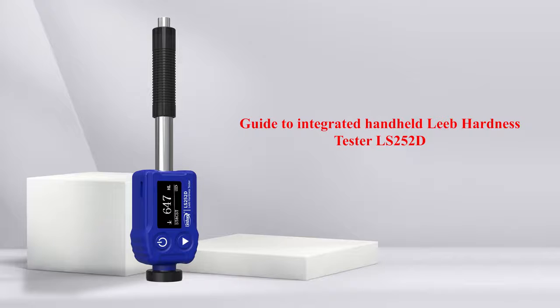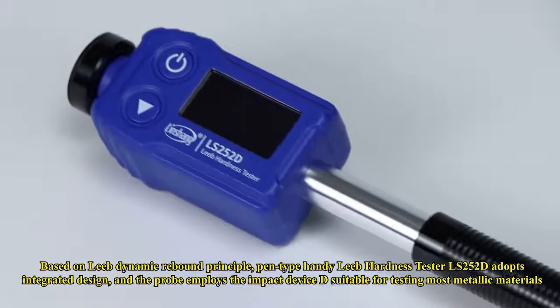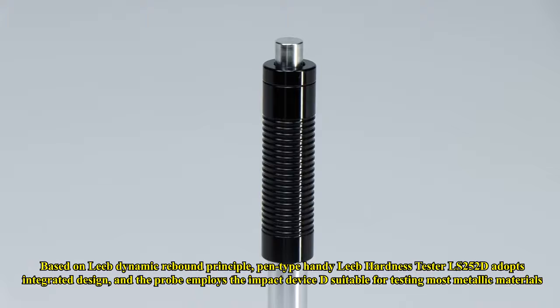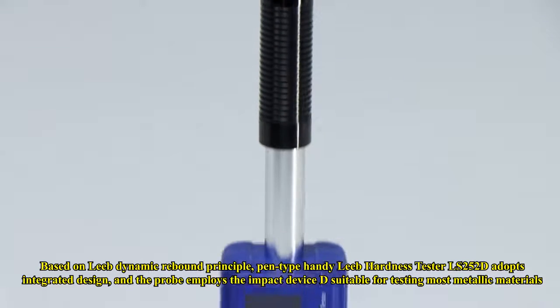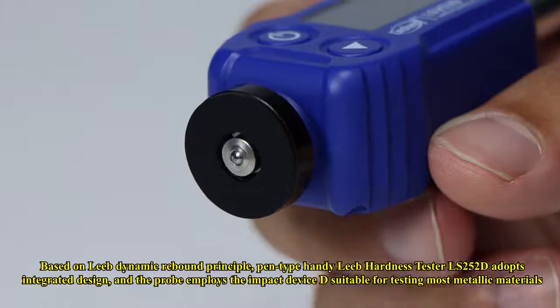This is a guide to the integrated handheld Lieb Hardness Tester LS252D, based on Lieb dynamic rebound principle. The pen-type handy LS252D adopts integrated design, and the probe employs the impact device D suitable for testing most metallic materials.